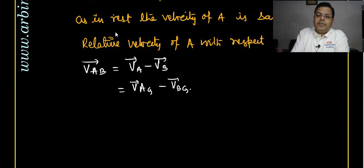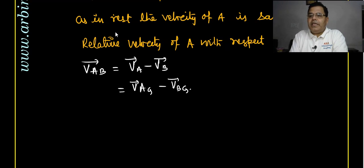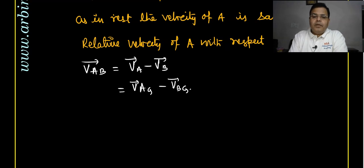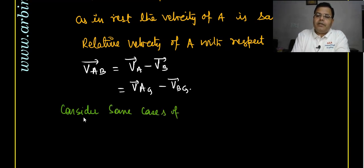This is also defined as velocity of A with respect to ground minus velocity of B with respect to ground, because the bodies' speeds are given with respect to ground. Relative velocity is described in both one dimension and two dimensions, but since we are in the chapter on one dimension, we will discuss relative velocity in one dimension only. We will revisit it for two and three dimensions when we cover motion in a plane.